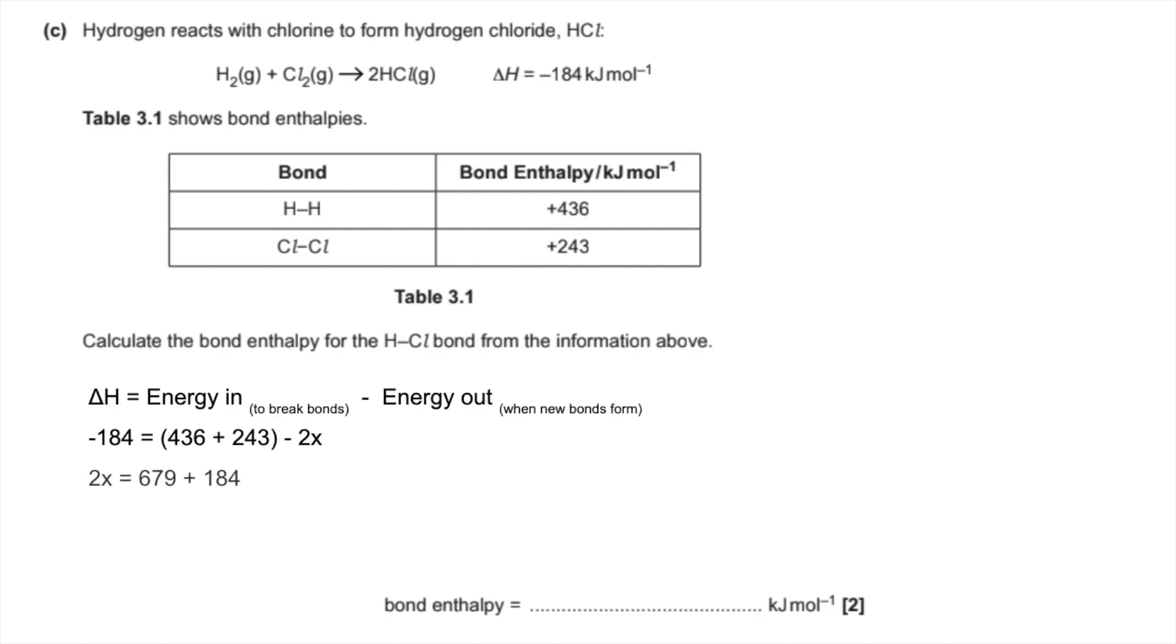So we'll tidy that up. So 2X equals 679, so that's the sum of the bracket, plus 184. So we're taking that over to the other side. So 2X comes out at 863. Therefore X is half that, 431.5. So the bond enthalpy is plus 431.5 kilojoules per mole.